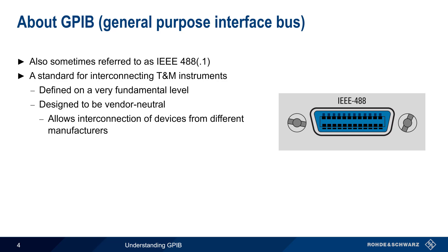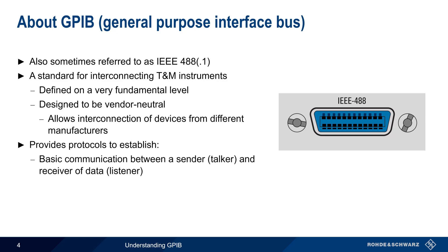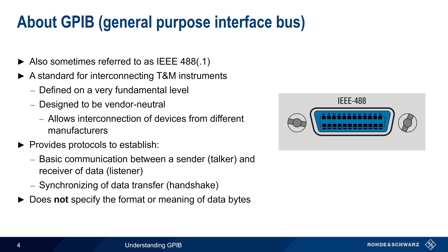In addition to the physical and electrical characteristics, GPIB also defines protocols or procedures to establish basic communication between a sender or talker and a receiver or listener. It also includes a handshake procedure for synchronizing data transfer. Note that GPIB does not specify the content or the meaning of data bytes sent over it. We'll come back to this point later in this presentation.